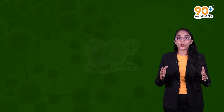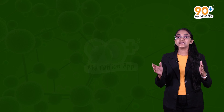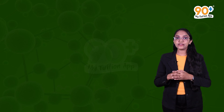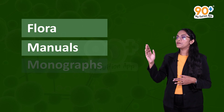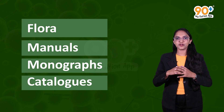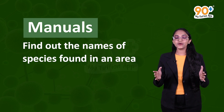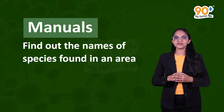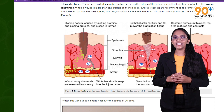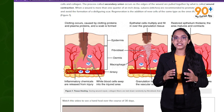There are other taxonomic aids that help describe and identify organisms — flora, manuals, monographs, and catalogs. Flora provides all the information about plants of a particular area. Manuals help find the names of species found in an area. Monographs, as the word suggests, give information about a single taxon. With this, we are done with all the taxonomic aids.